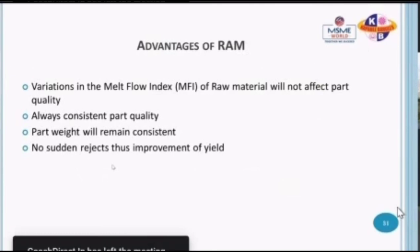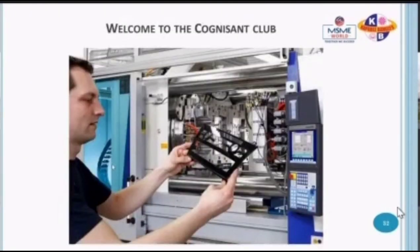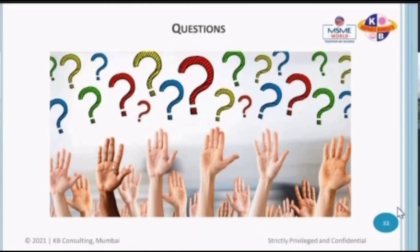Process consistency is the key to consistent quality. The advantages of RAM: changes in the melt flow index — a property of plastic which determines how viscous it is — will not affect part quality. There is always consistent quality, part weight is also consistent, and there are no sudden rejects, thus an increment of yield. Welcome to the cognizant club — you now understand how to create a product, what process to use, and if you're using injection molding, that RAM is the right way to create the same quality product time and again. I'm open for questions. What are the advantages of cap compression molding over injection molding?